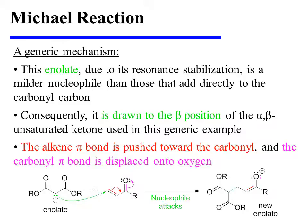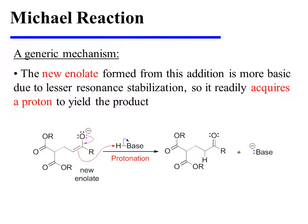Due to its resonance stabilization, this enolate is a milder nucleophile than those that add directly to the carbonyl carbon. Consequently, it is drawn to the beta position instead. The alkene pi bond is pushed toward the carbonyl, and the carbonyl pi bond is displaced onto oxygen. Notice that a new carbon-carbon bond is formed. In addition, a new enolate has been formed as well, but this new enolate is more basic due to its lesser resonance stabilization, so it readily acquires a proton to yield a neutral product.